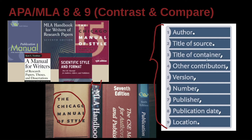Basically, they lay out what they want you to do: have the author with a period, title of source with a period, then what's inside with a comma, any contributors with a comma, version number with a comma, number, publisher's name with a comma, publication date with a comma, then end it with a period after the location if needed. If you include these things with the commas and periods correctly, you've got your reference. That's a really great way that the MLA has given you a guideline rather than a list of rules.